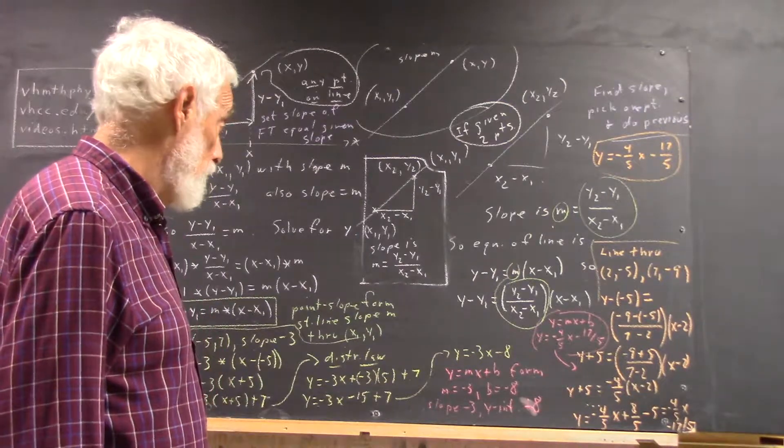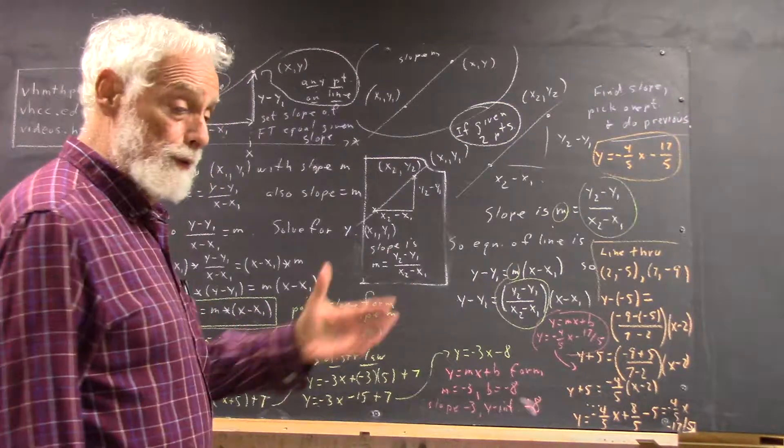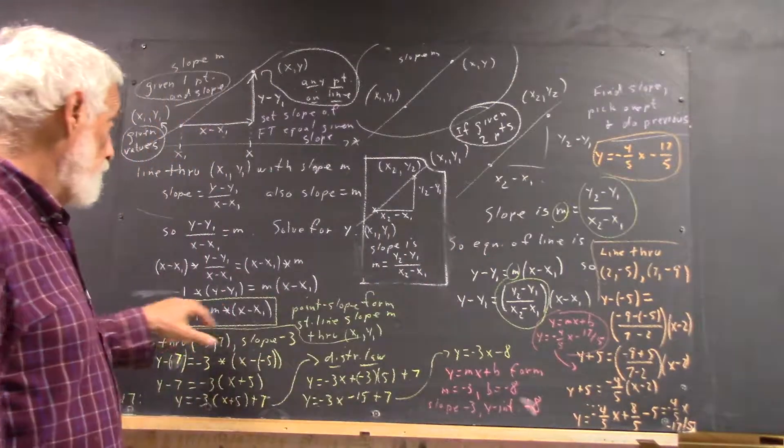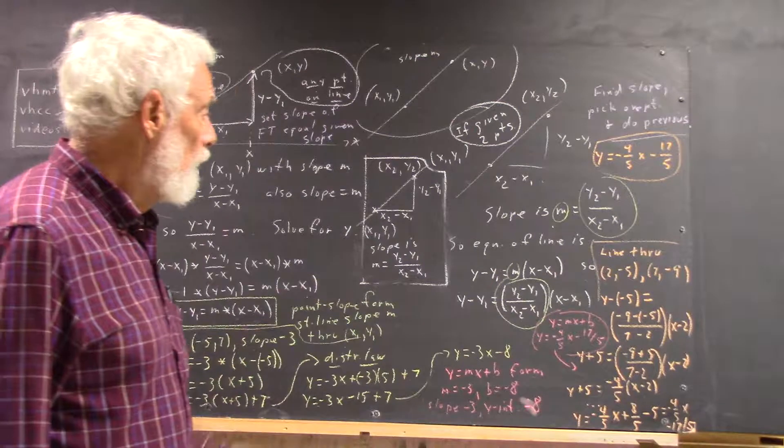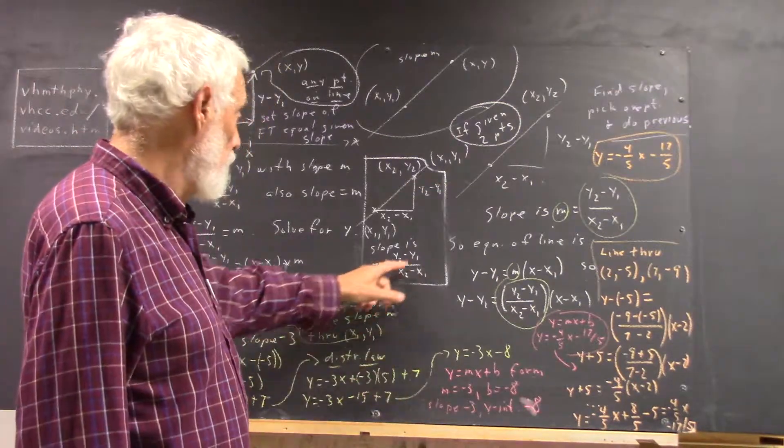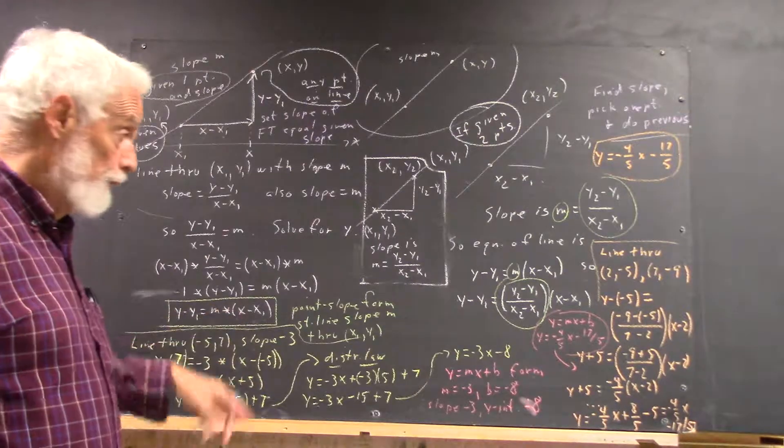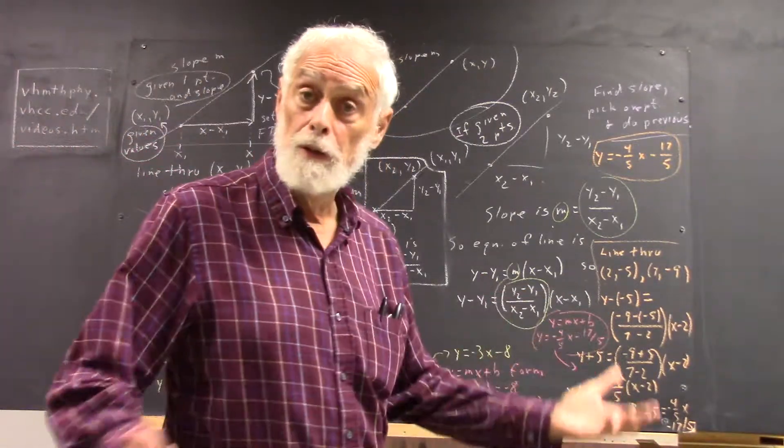Okay, so if I ask you to get the equation of a line through a given point with a given slope, you can use this formula. If it's two points, you can use this formula to get the slope and then use one of the points with the slope to get this, or you can memorize this and substitute into that.